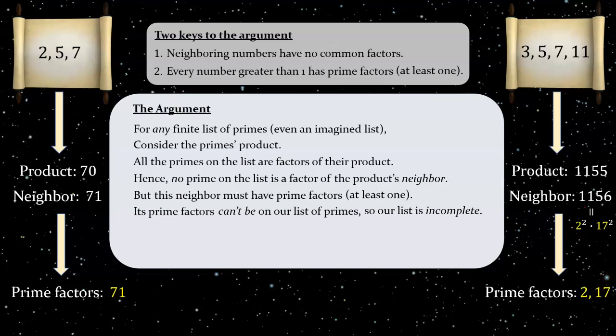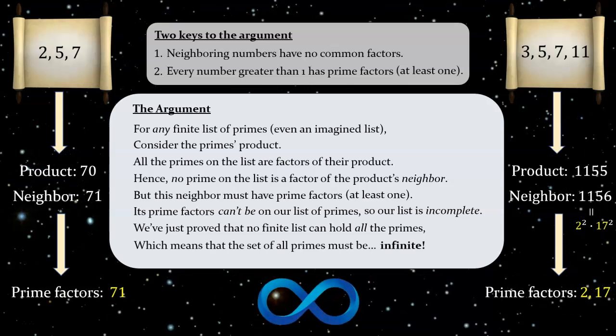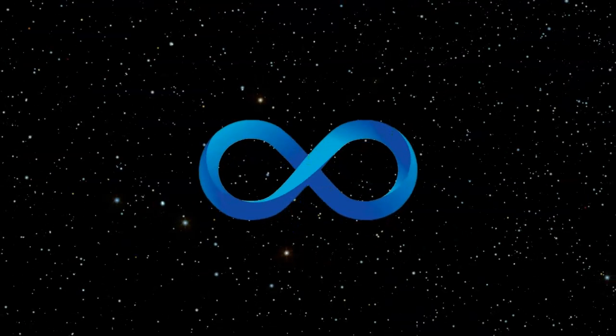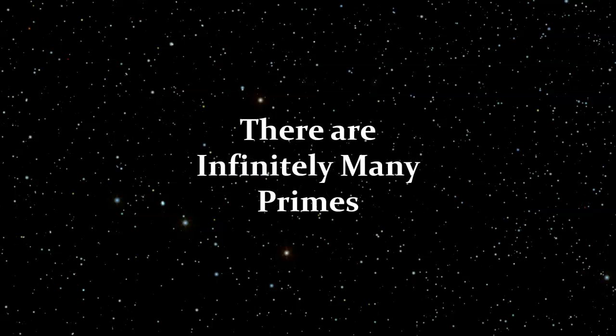The argument is perfectly general, and refers abstractly to any finite list of primes. So we haven't just shown that our two specific examples of lists are incomplete. We've shown that any finite list of primes, no matter how large, is necessarily incomplete. Or to put the same idea in slightly different words, we've just proved that no finite list can hold all the primes, which means that the set of all primes must be infinite. And thus we know, beyond a shadow of a doubt, there are infinitely many primes.